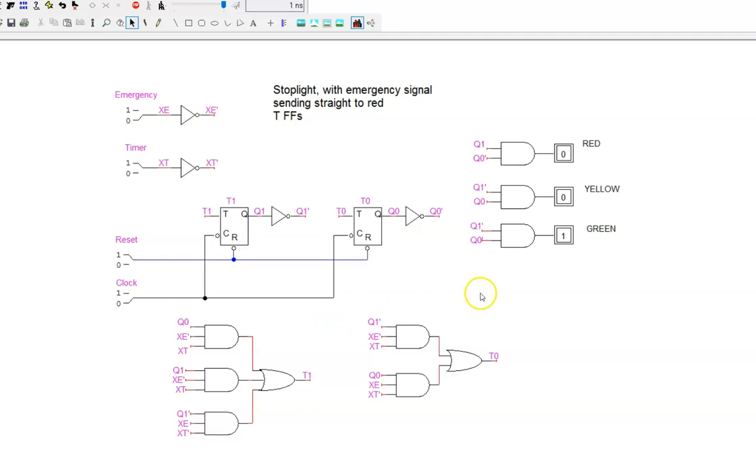The fun thing about this design is that it is visually satisfying. We can see how the light turns from green to yellow when the timer is activated, and then again from yellow to red, and then again from red to green. We can also see how it jumps straight to red when the emergency signal is activated. But most of the time, neither of these inputs will be activated, and the light remains at its current state.